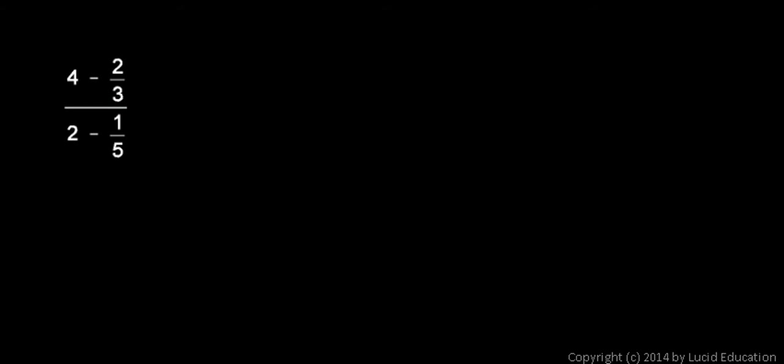And here's how you do it. Take a look at the denominators 3 and 5 and ask yourself what would be the least common denominator for those numbers. And in this case the least common denominator is 15.